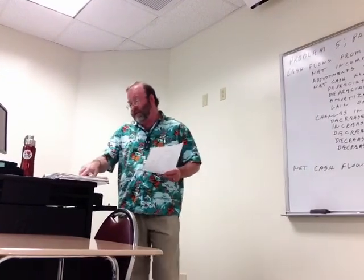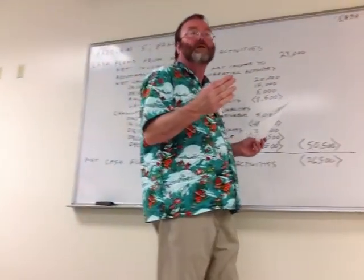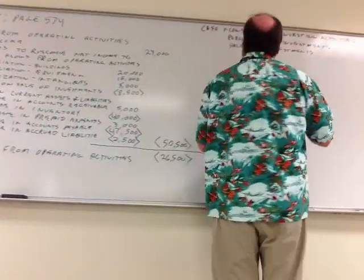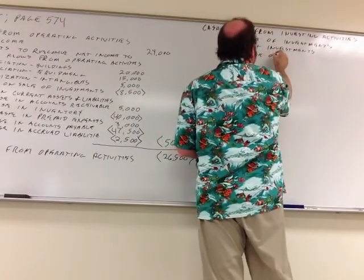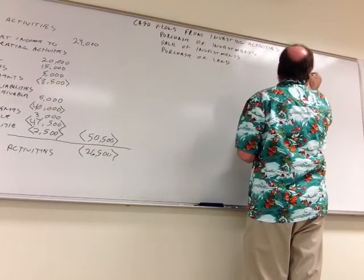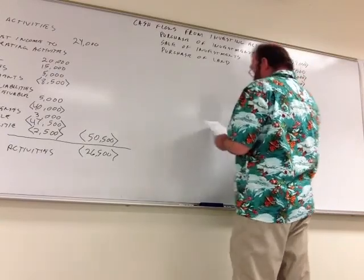The buildings went from $230,000 up to $300,000, so that tells us that the $80,000 purchase of land and the warehouse broke down as $10,000 for land and $70,000 for the building. So we've got purchase of land for $10,000 and purchase of building for $70,000.